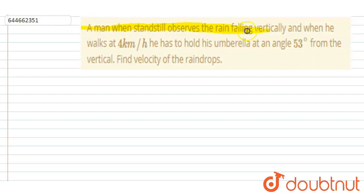A man when standing still observes the rain falling vertically downward. When he walks at 4 kilometer per hour, he has to hold his umbrella at 53 degrees from the vertical. Find the velocity of the raindrops.